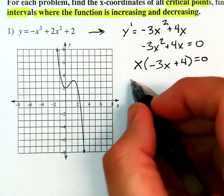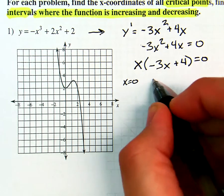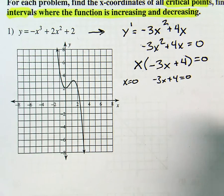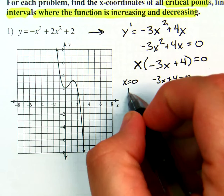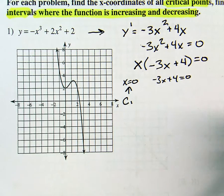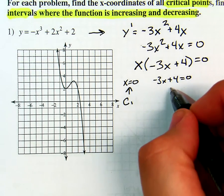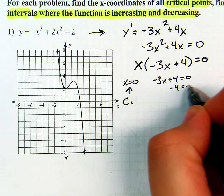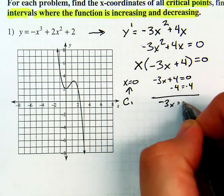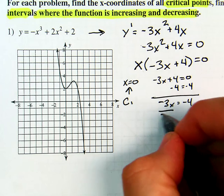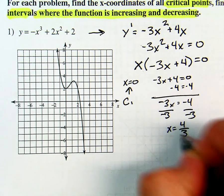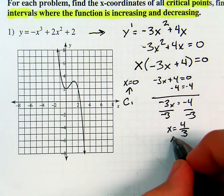So I get x equals zero — that's c1. To find c2, solve negative 3x plus 4 equals zero. Subtract 4: negative 3x equals negative 4. Divide by negative 3: x equals 4 thirds. So this is c2.